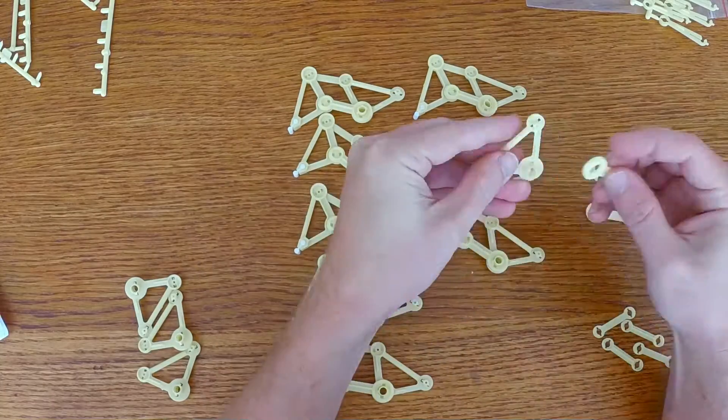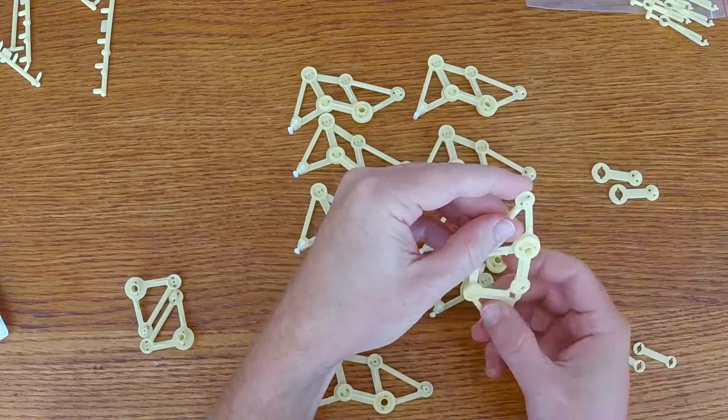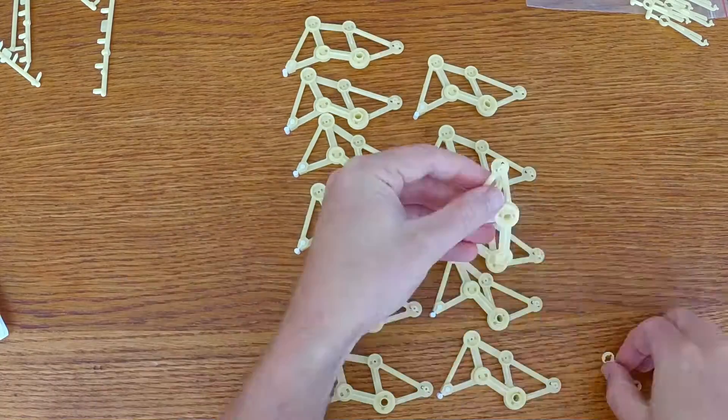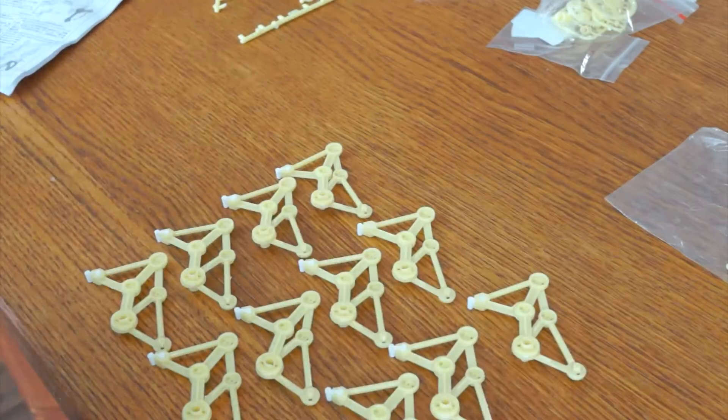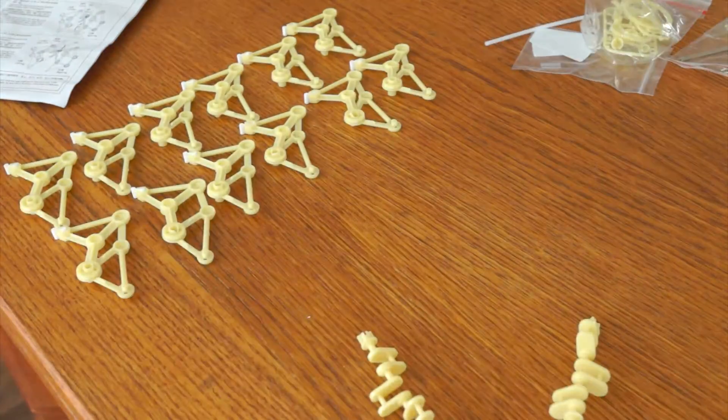And they're all symmetrical. There's not like a right leg and a left leg. They all are exactly the same, so you don't have to worry about having them flipped in orientation for this next step.